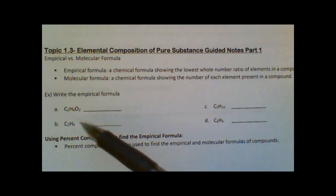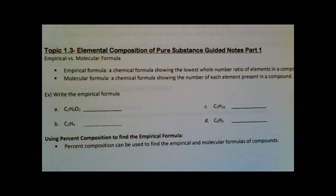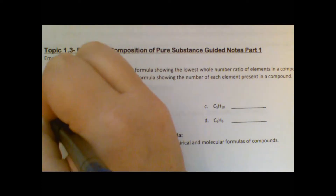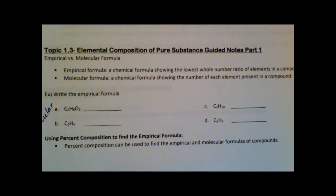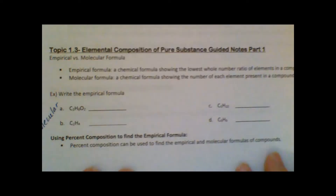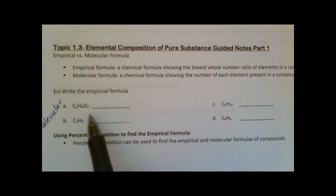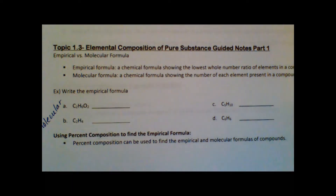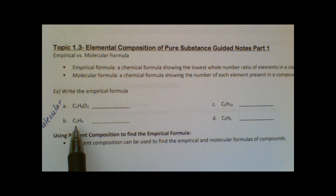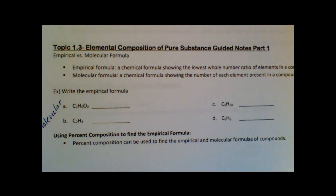Below you'll see four different chemicals — these are all molecular formulas showing what actual elements are in each molecule. For instance, letter A is C2H6O2, meaning two carbons, six hydrogens, and two oxygens bonded together. Letter B, C2H4, is called ethene gas and has exactly two carbons and four hydrogens. These are molecular formulas.